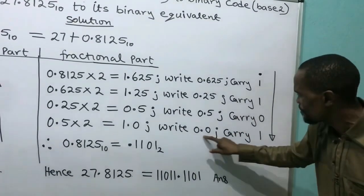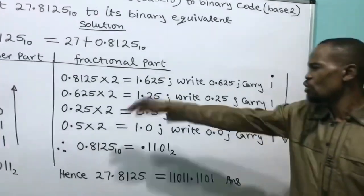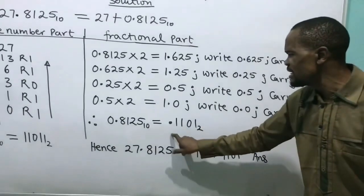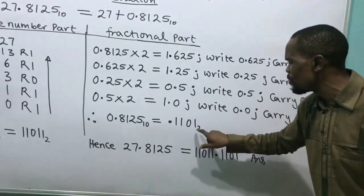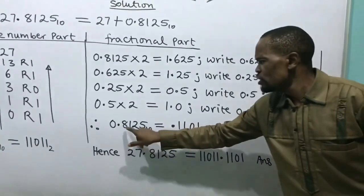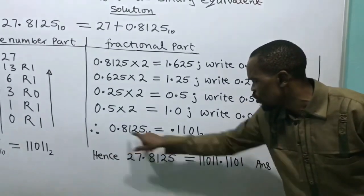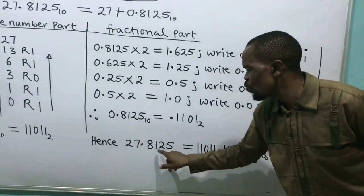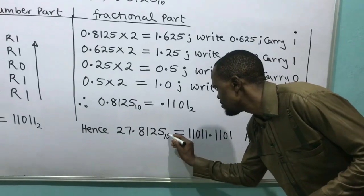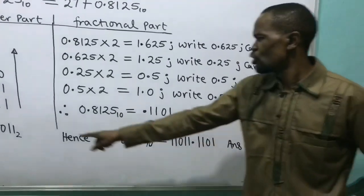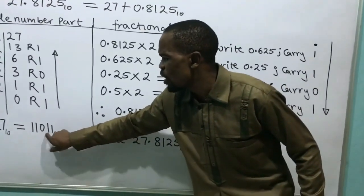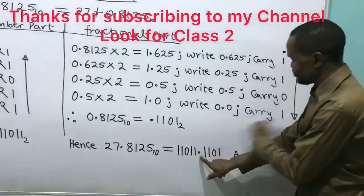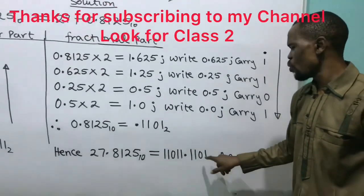We are now at termination — my fractional part has come to 0.0, which terminates. I cannot multiply again because it is terminate. So: 0.8125 base 10 is the same as 0.1101 base 2.